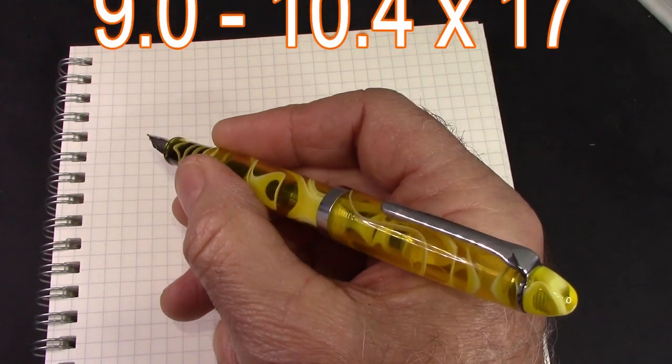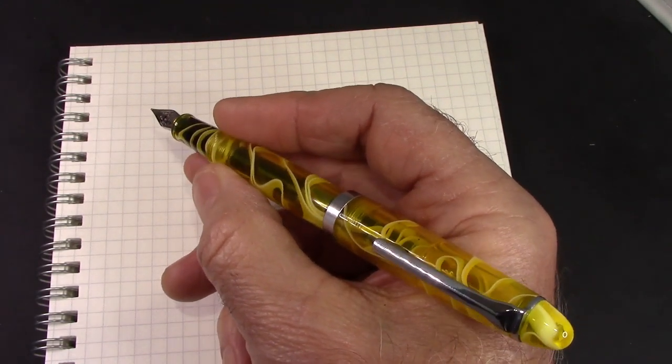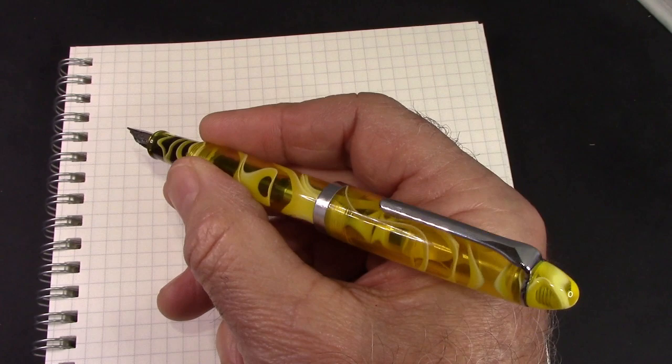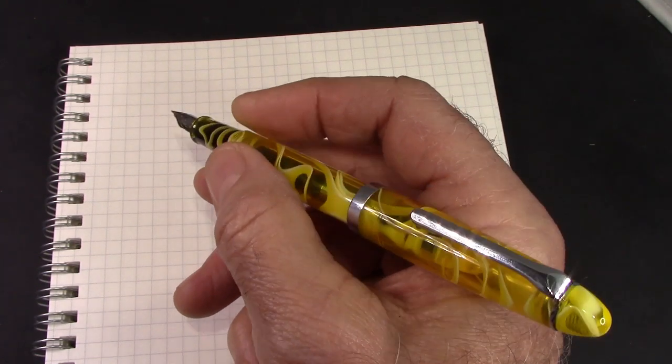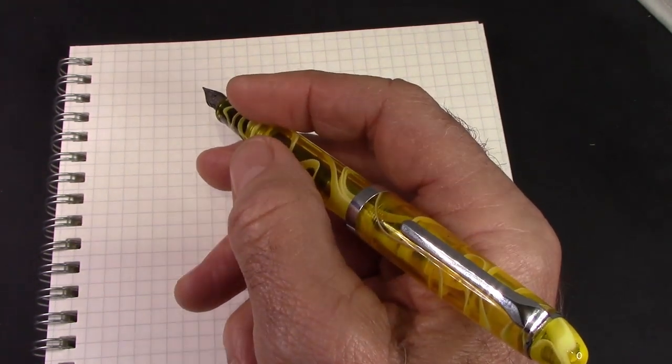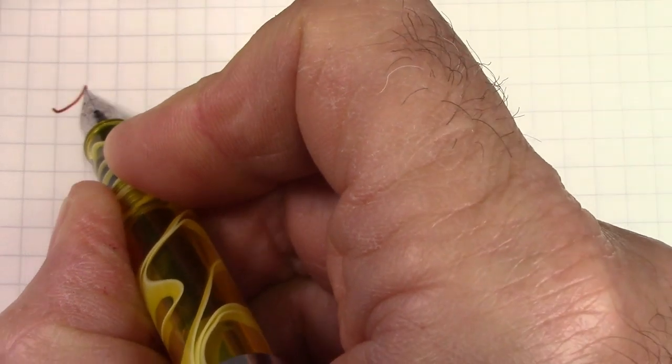So let's see how that J. Herbin Rouille D'Ancre ink works in this nib on this Fabriano paper.